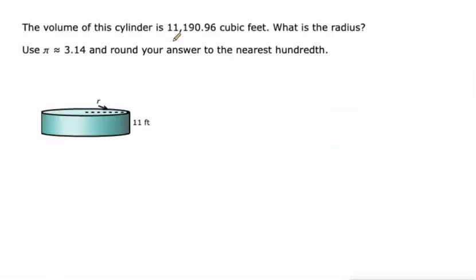One more. And this one is a little bit different because we're working backwards to figure out the radius, and we're given the volume. So again, volume equals pi r squared h. That's our formula. It's the area of a circle, and then how many circles are stacked on top of each other.